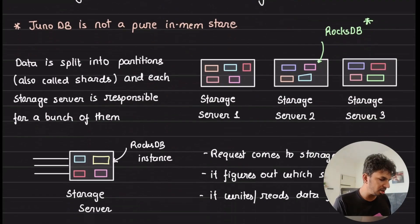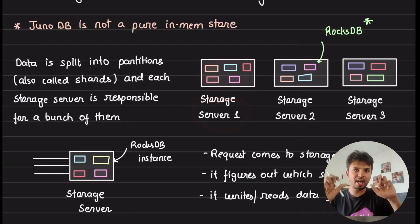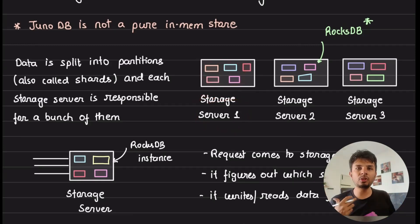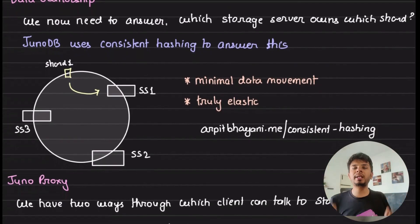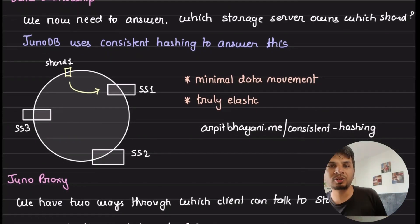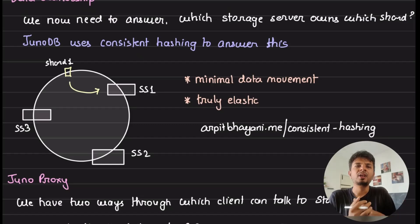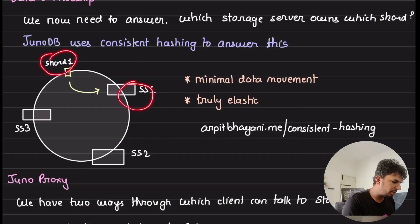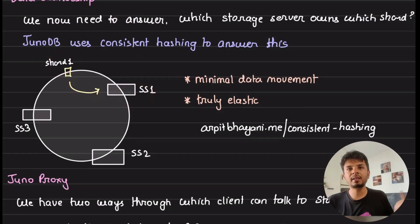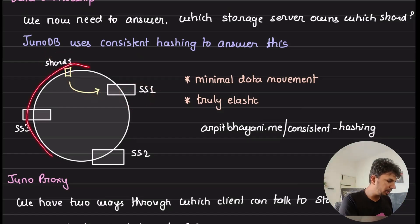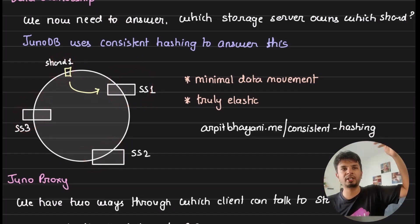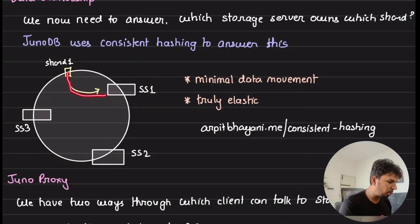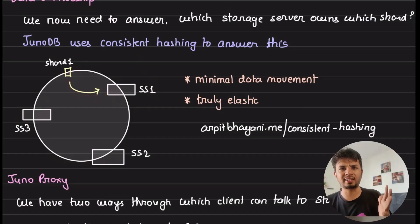Because each storage server owns a bunch of shards, the key question is: how do you know which storage server owns which shard? To answer this, they use consistent hashing. Given a shard, which storage server owns it is answered by consistent hashing — you put all storage servers in a ring, use the same hash function to hash the shard, and the node to the immediate right owns it. A classic consistent hashing implementation.